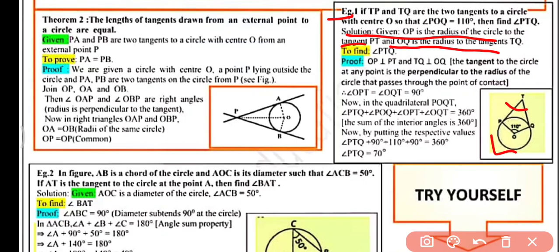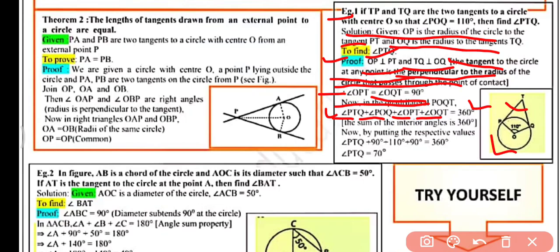Since the tangent at any point is perpendicular to the radius, angle OPT = angle OQT = 90°. In quadrilateral POQT, by the angle sum property: angle PTQ + angle POQ + angle OPT + angle OQT = 360°. Substituting the known values, we get angle PTQ = 360° − 110° − 90° − 90° = 70°.